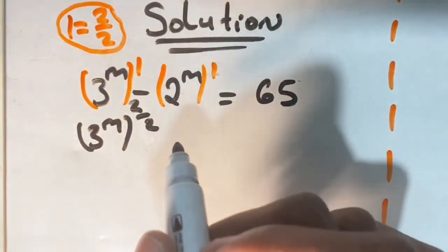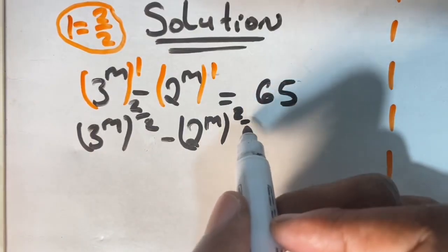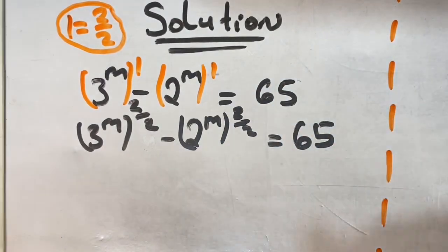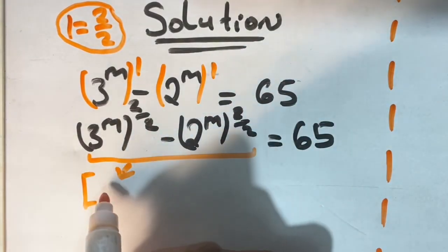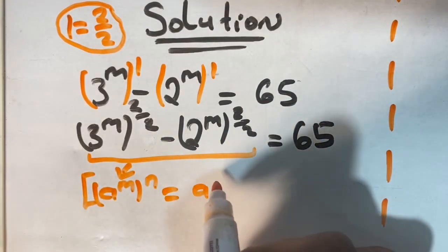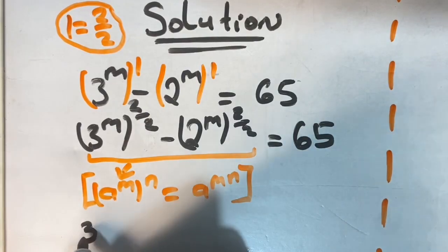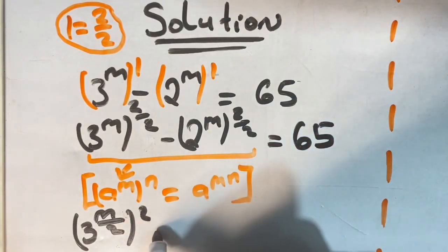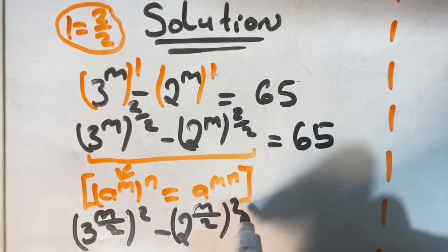So now we can write our equation as follows: 3 to the power of m in brackets powered by 2 over 2, minus 2 to the power of m also powered by 2 over 2, is equal to 65. Doing this will make the equation a lot simpler and possible to solve. We are also going to be using our laws of indices, where a to the power of m in brackets powered by n equals a to the power of m times n. So we can have 3 to the power of m over 2, in brackets to the power of 2, minus 2 to the power of m over 2, in brackets to the power of 2, is equal to 65.